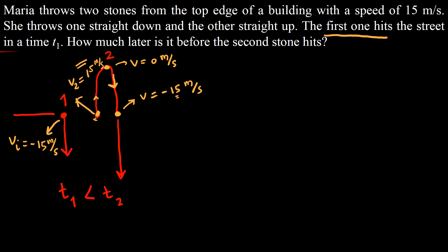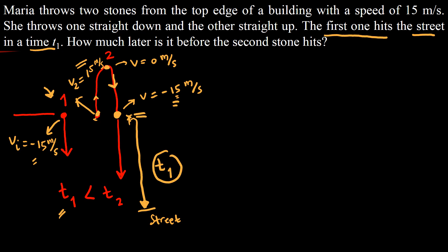Now, if the first stone hits the street at T1 — released with a velocity of negative 15 meters per second — it reaches the street at time T1. Therefore, when the second stone returns to the point where it was released, it is now also moving at negative 15 meters per second, same as the first stone. From that point to the street it should also take time T1, because they are at the same height and same velocity. The extra time for the second stone is due to this upward portion — it still has to go up before falling toward the street.